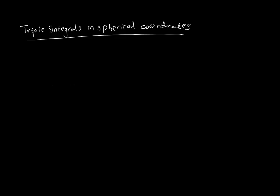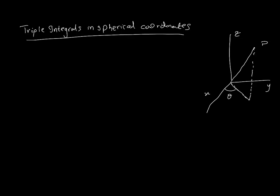The next video on triple integrals, hopefully the last one, is to do with the second type of polar coordinates: the spherical coordinates. In spherical coordinates, you have some point P in space. We've used theta in the xy-plane before, with r cosθ. Now we also introduce another angle with the z-axis, which we call phi. So we have two angles: theta and phi.